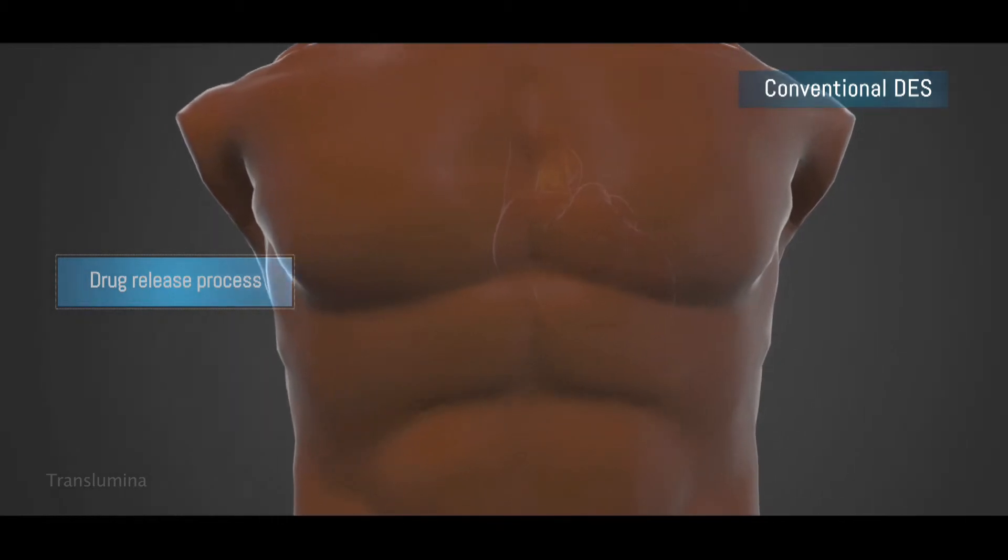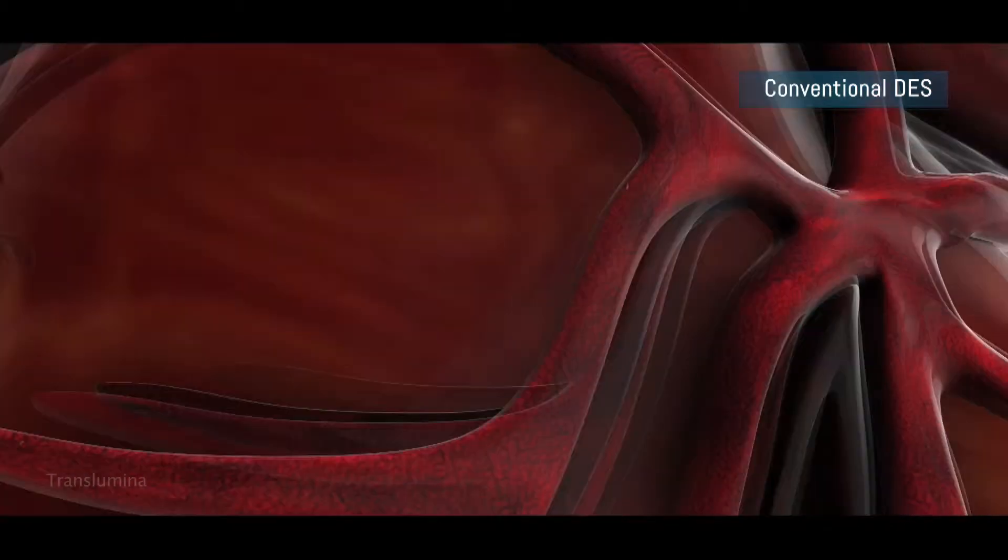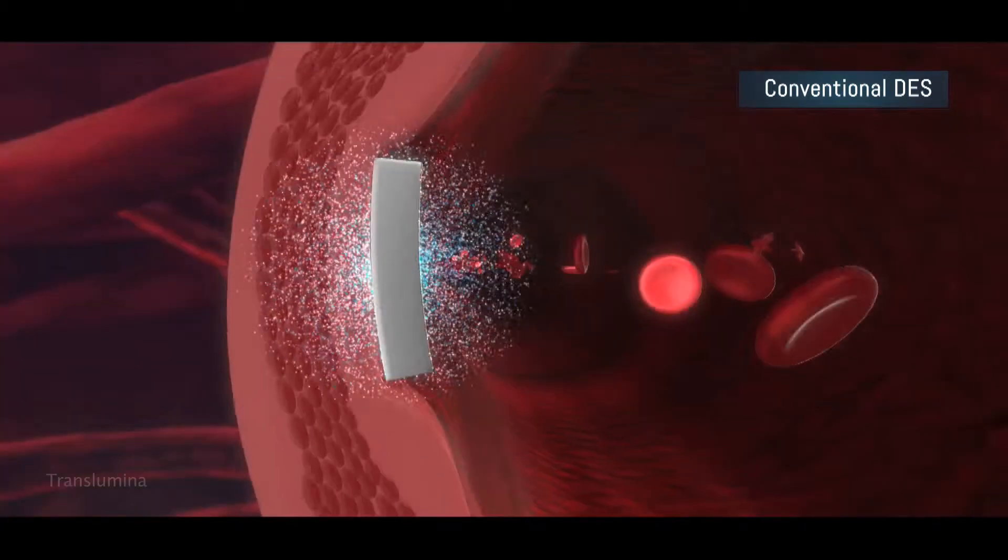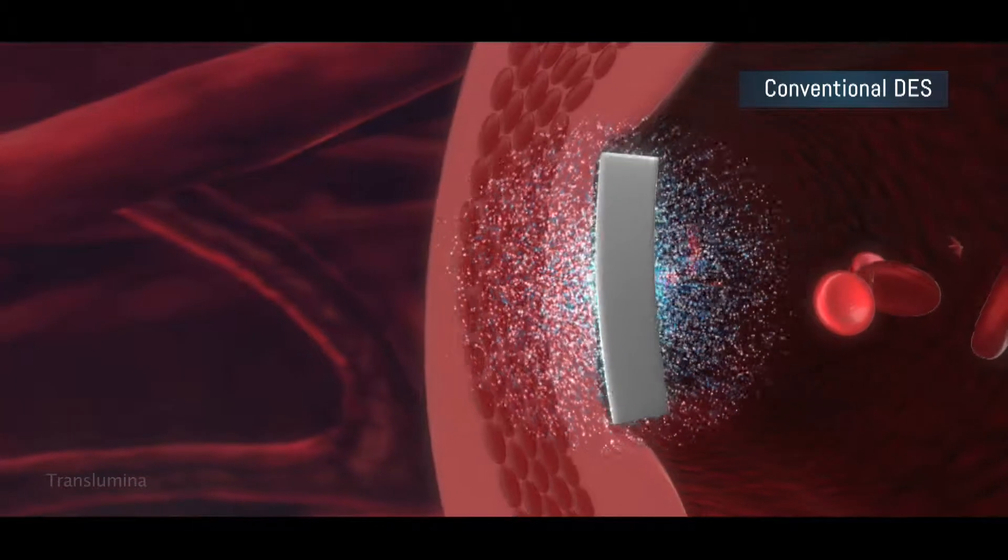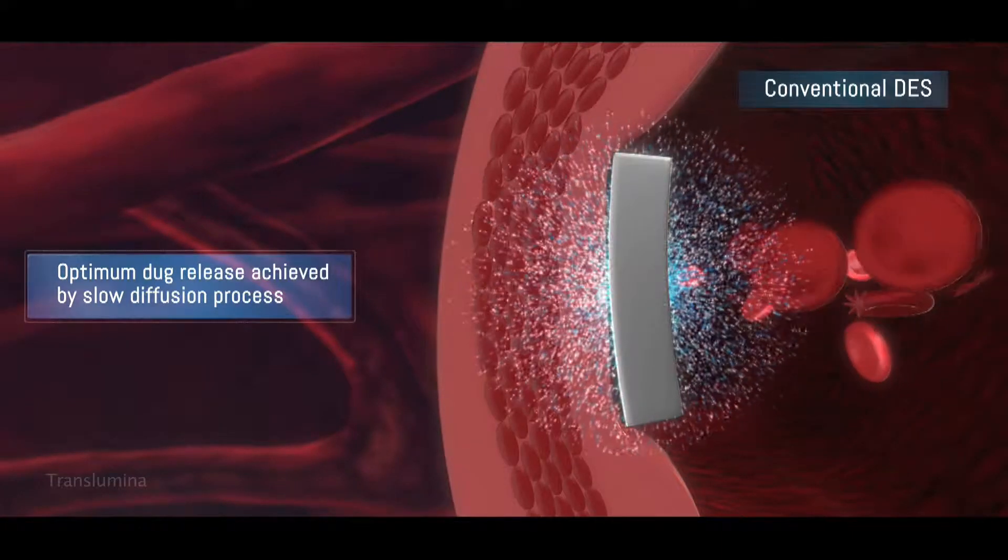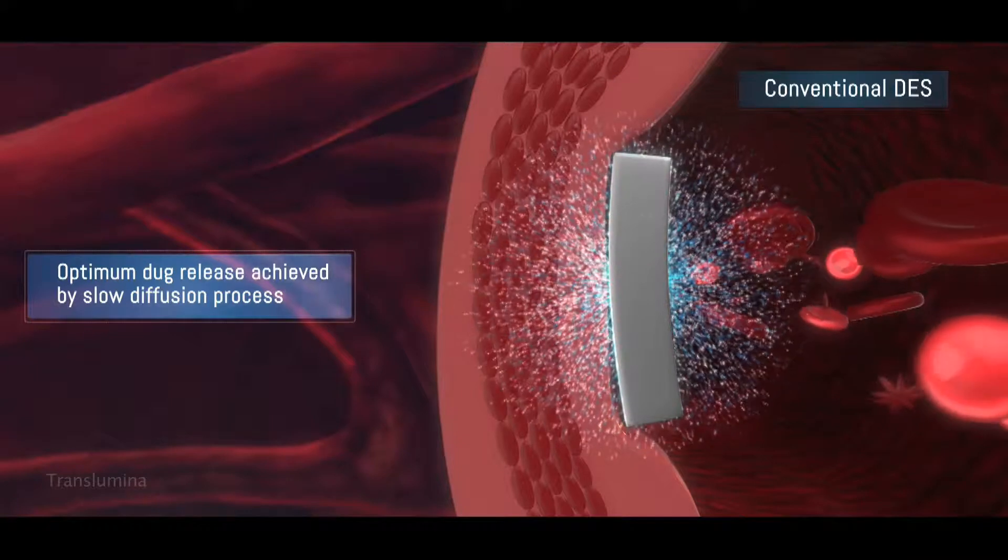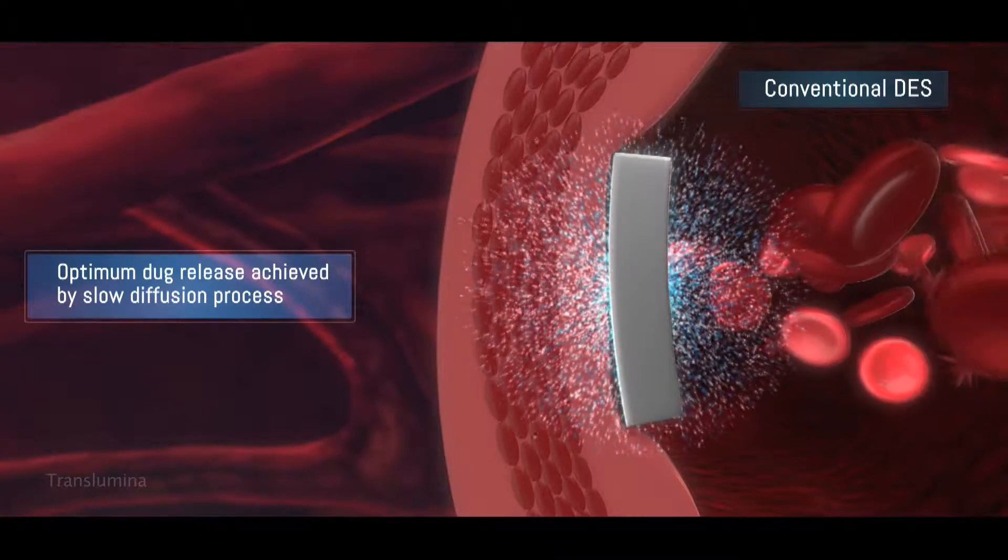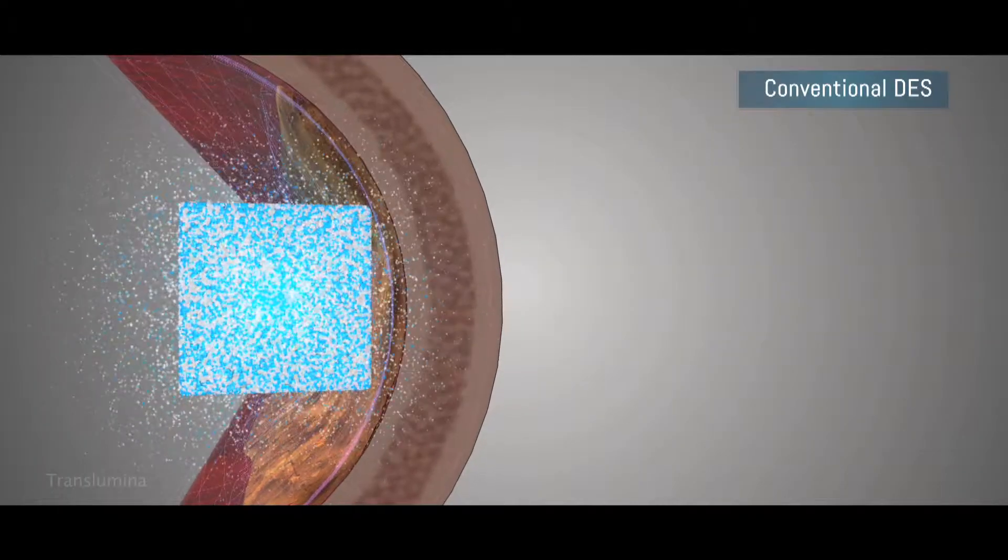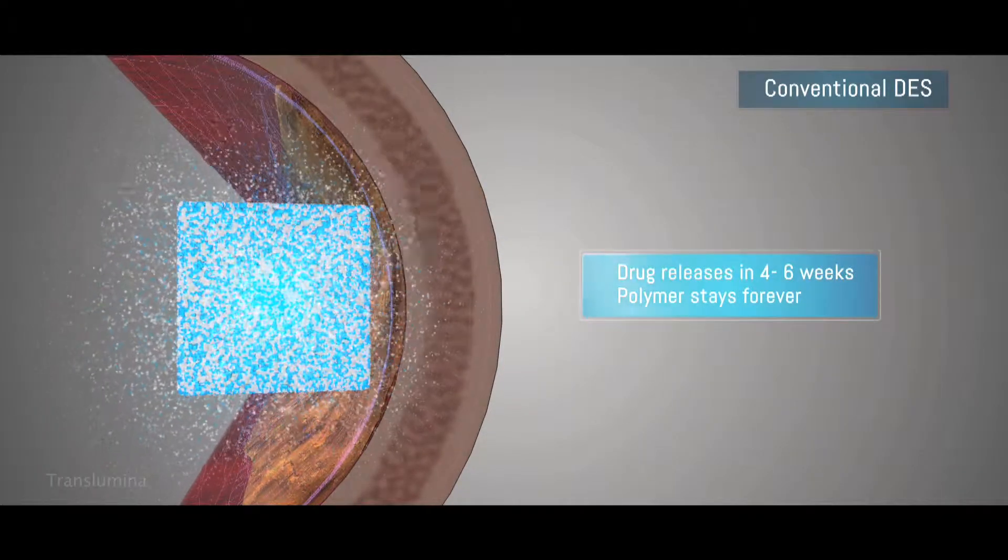In a conventional DES, the drug release process starts as soon as the DES gets deployed. The optimum drug release kinetics is achieved by a slow diffusion process due to lipophilic attraction of the lesion surface and inertia of the covalent bonds of the drug polymer matrix. The drug is released between four to six weeks but polymer stays forever.